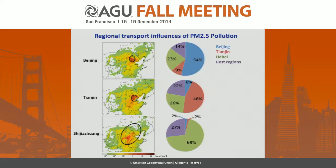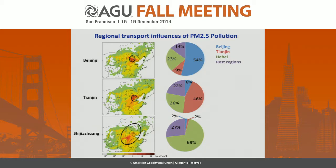On my last slide, I want to say a few more words about regional transport influence. We have a consensus that pollution is largely local, but we still lack quantitative estimates of how strong regional influences are. We apply the adjoint method to PM2.5 pollution at three cities: Beijing, Tianjin — a nearby mega city — and Shijiazhuang, the capital city of Hebei province. The bar plot shows regional emission contributions. Nearby sources have the largest contribution, but all three cities display diffuse source contributions, and the transport patterns differ depending on their location.